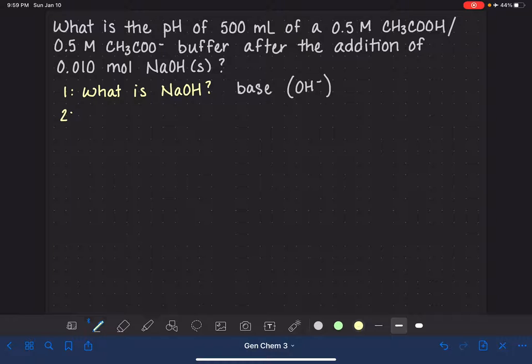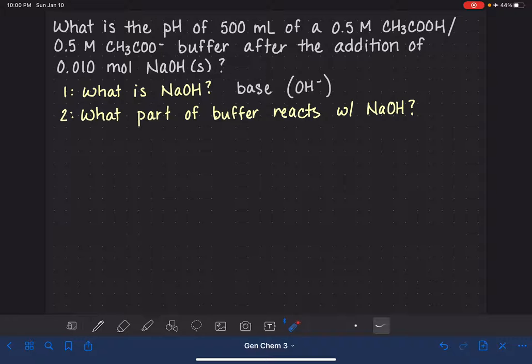The second thing that we have to figure out is which component or what part of the buffer will react with this NaOH. The buffer is going to do an acid base reaction with the NaOH. So since NaOH is a base, that means the buffer's acid is the thing that will be reacting with the NaOH.